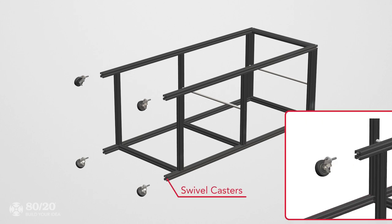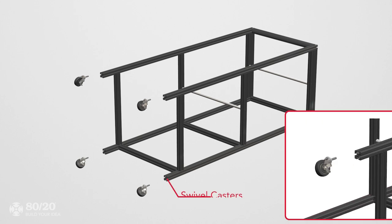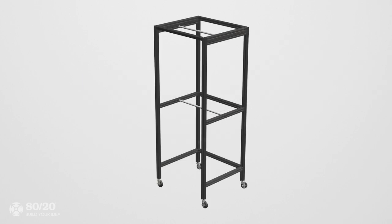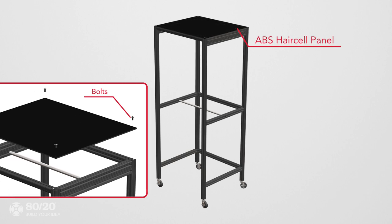With the build still laying down, connect swivel casters into the bottom of the build on profile A and profile B. Finally, we'll stand the build upright on its casters and install the panel top using bolts.